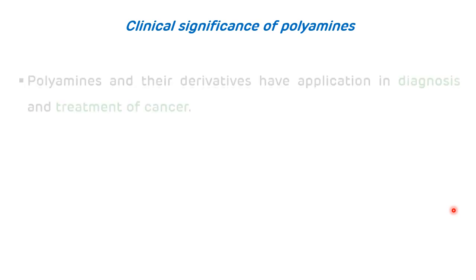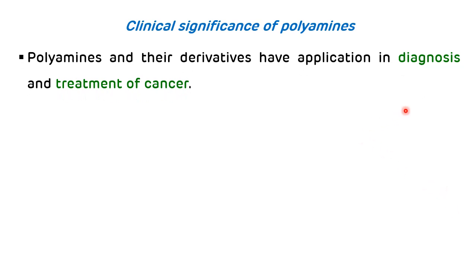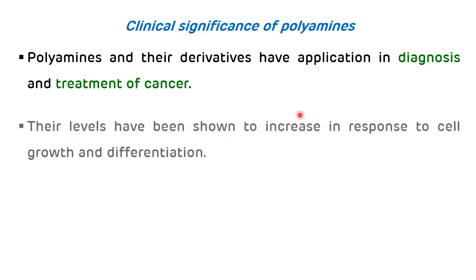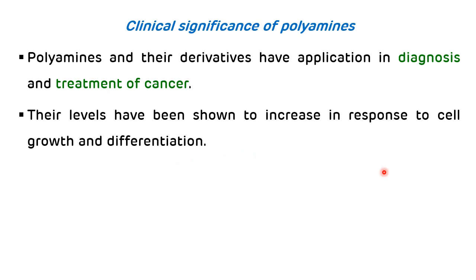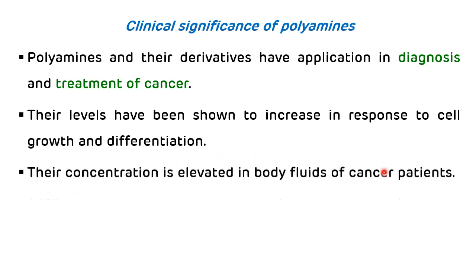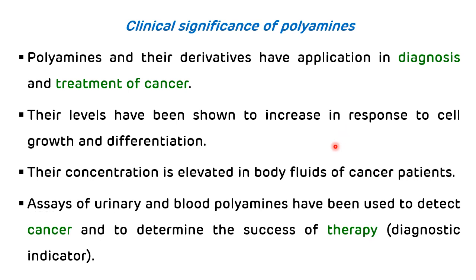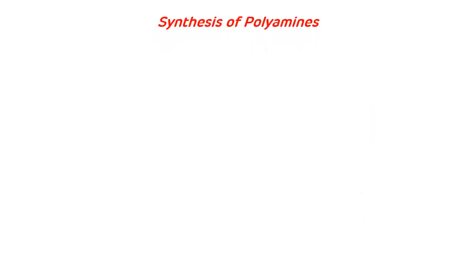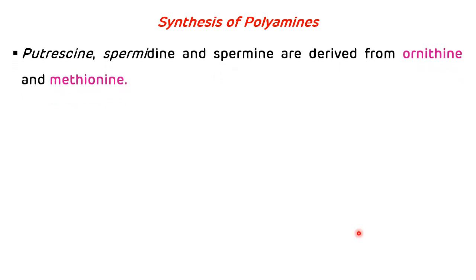Clinical significance of polyamines: as seen earlier, they play an important role as growth factors in cell growth and differentiation. Polyamines and their derivatives have application in the diagnosis and treatment of cancer because their levels increase during cell growth and differentiation. Measurement of urinary as well as blood polyamines has been used to detect cancer and determine the success of therapy, acting as a diagnostic indicator.